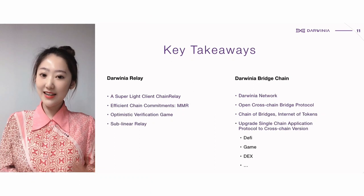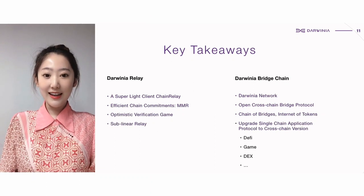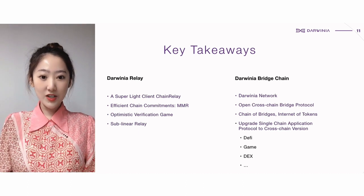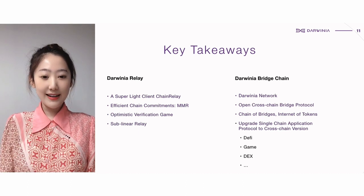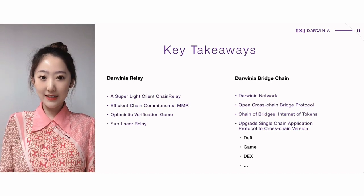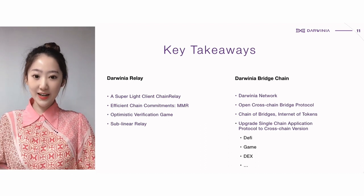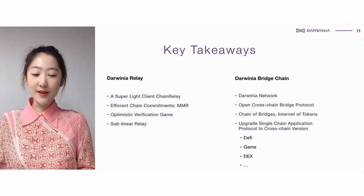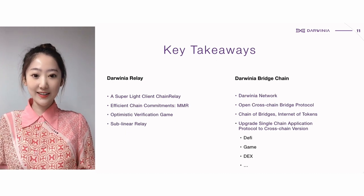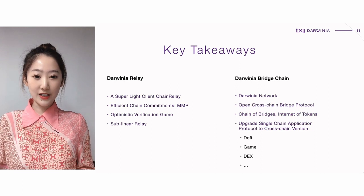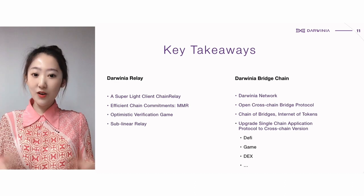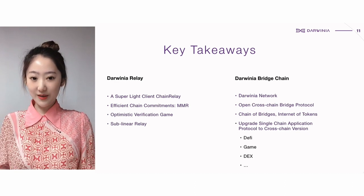Finally, let's quickly summarize some takeaway points of today's talk. Darwinia Relay is a super-light client chain relay. It adopts efficient chain commitment via MMR and the Optimistic Verification Game, achieving sub-linear performance. Darwinia Network is a bridge chain — an open cross-chain bridge protocol — that serves as critical infrastructure to help build the future internet of tokens. Any single-chain application, including games, DeFi, and DEX, can upgrade into a cross-chain version through Darwinia Network.